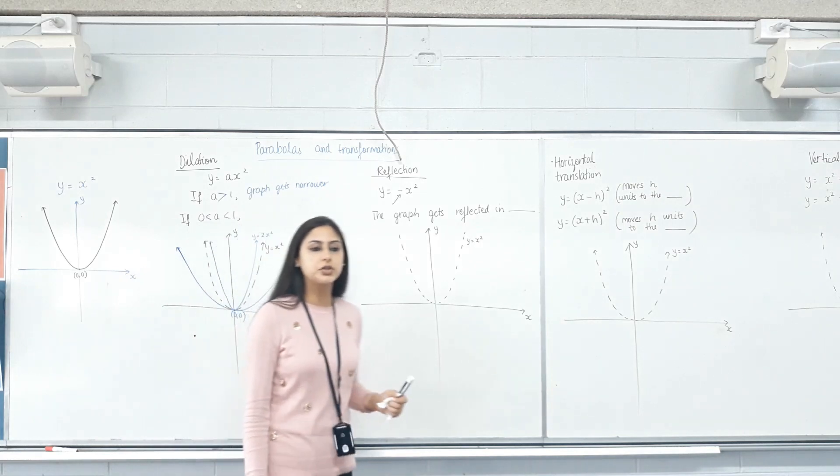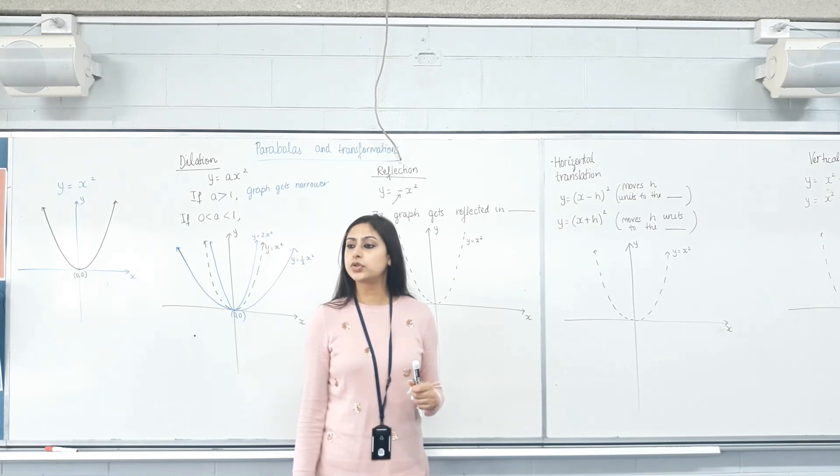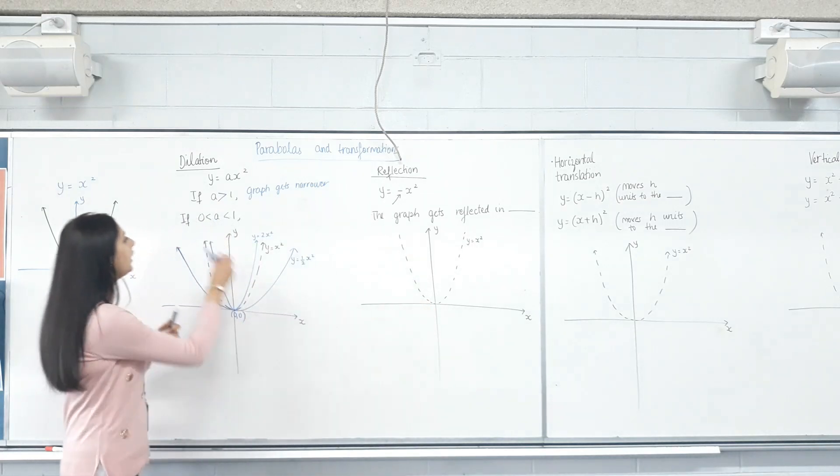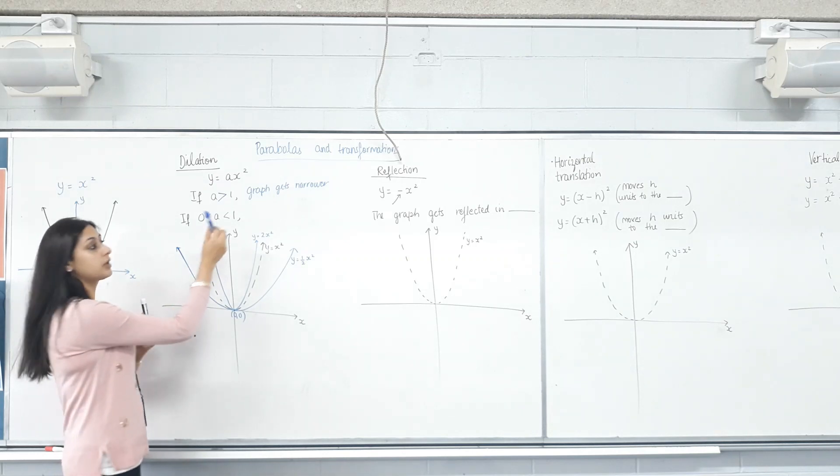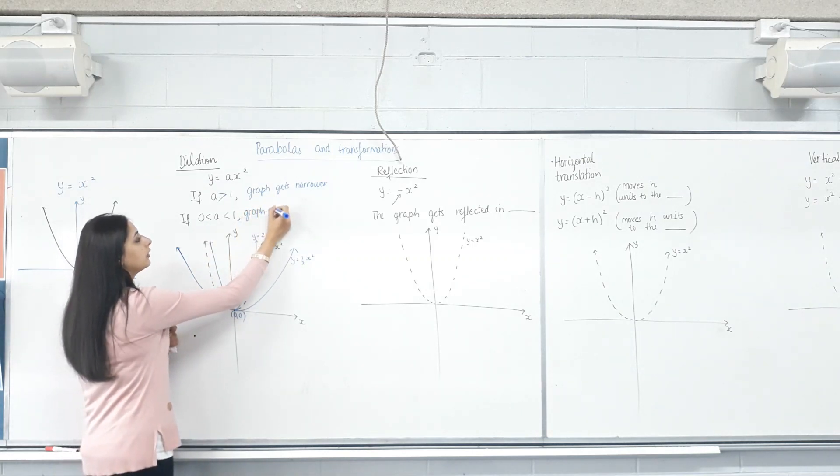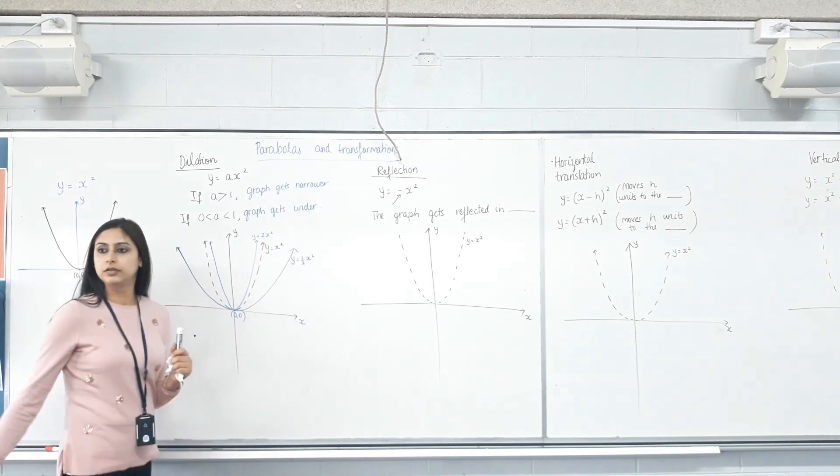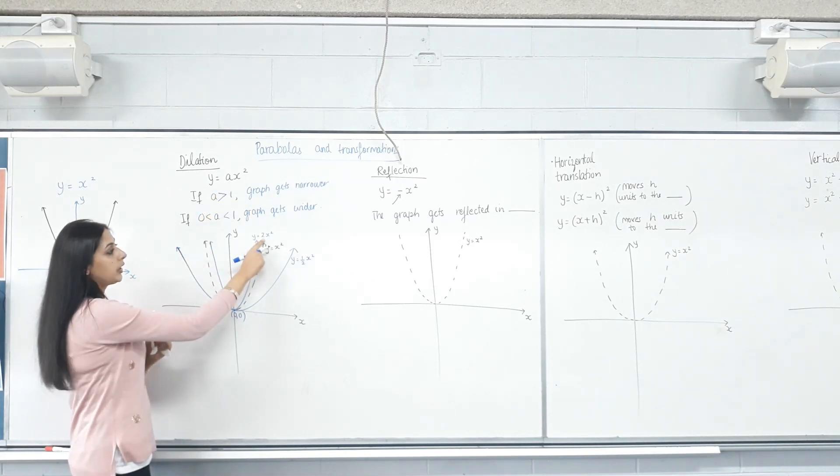CAS down once you've sketched all of them. So I know everyone's done. CAS down if you've sketched it. Eyes on the board. So is it safe to write then if a is greater than 0, that means it's a positive number but it's still less than 1, what happens to the parabola? It gets wider. But which one is a? The number multiplied by x squared. So if it's 2x squared, a is 2. If it's 3x squared, a is 3.